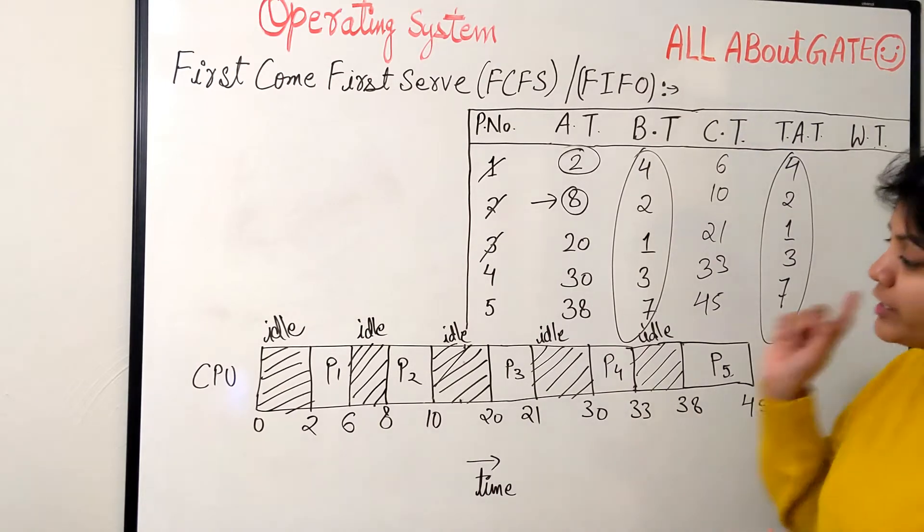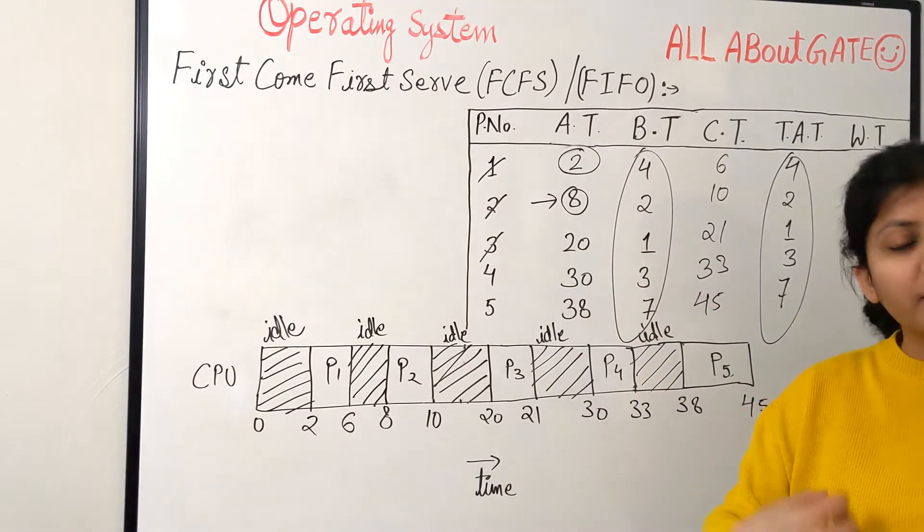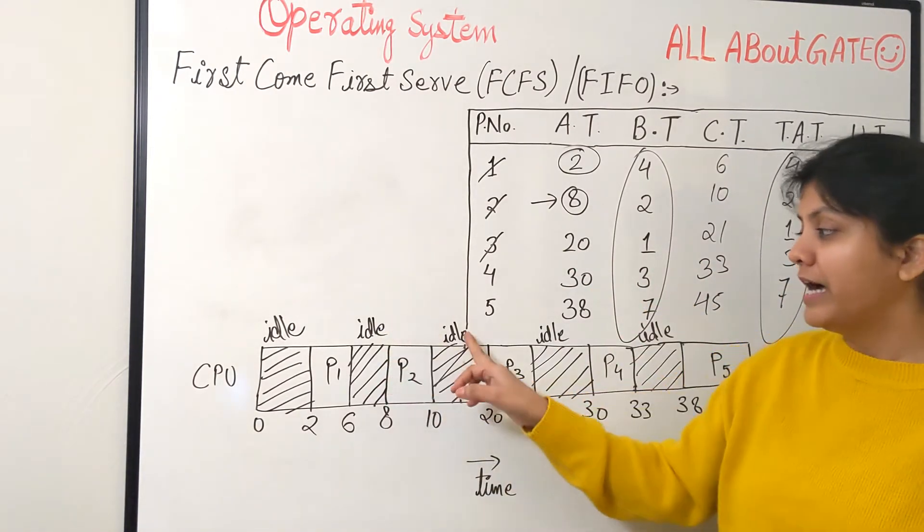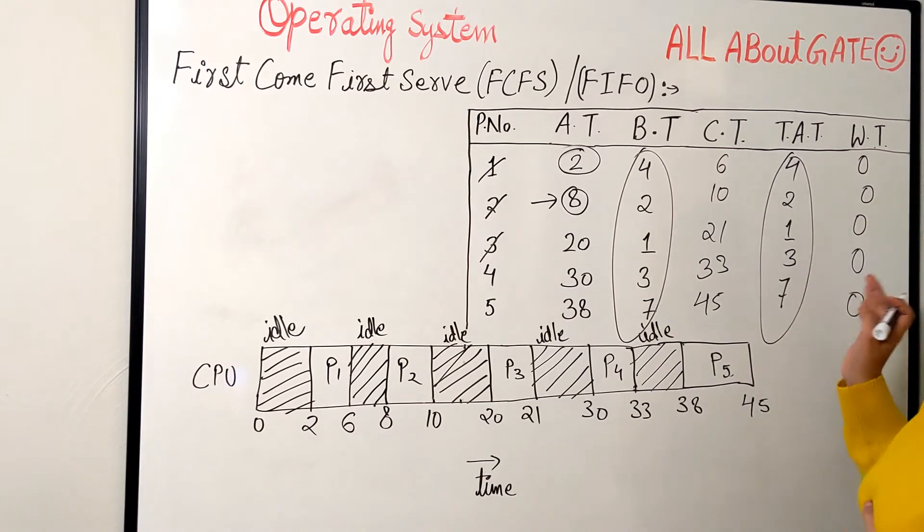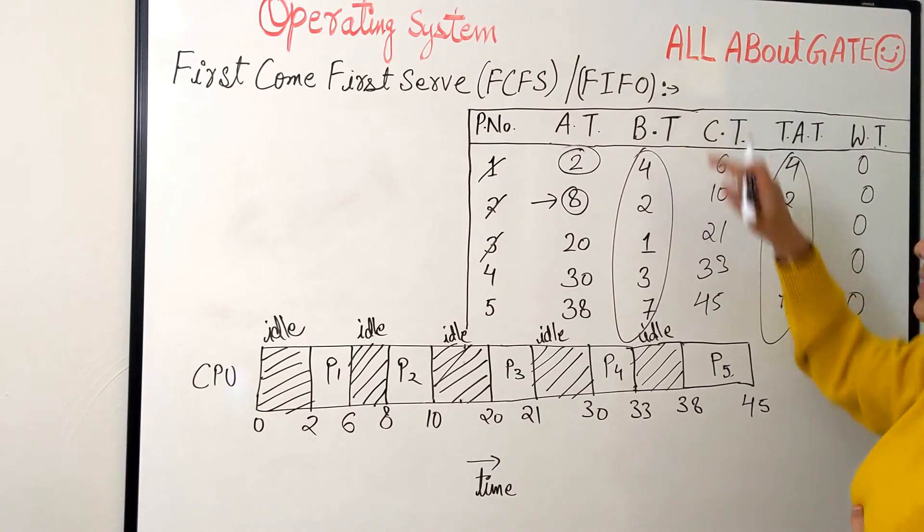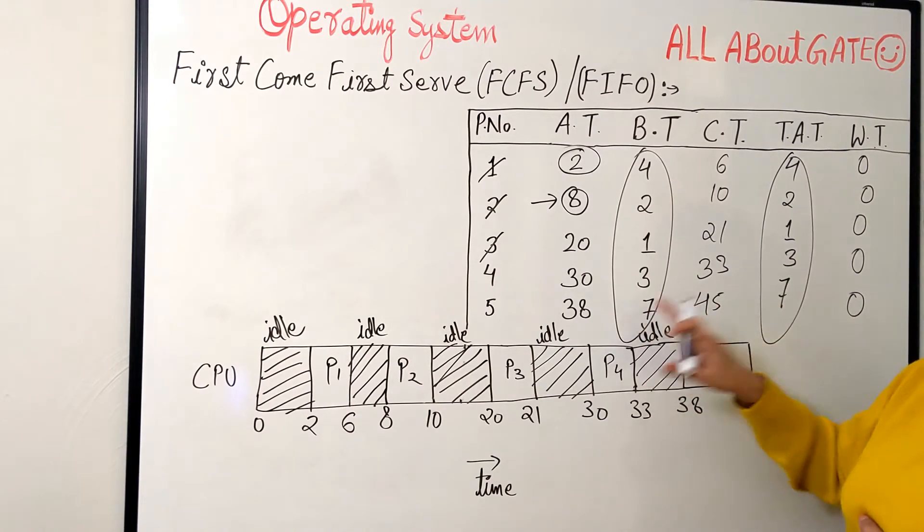Because none of the process has to wait. None of the process has to wait. In fact CPU was waiting for process to come and in that relation it was nothing but idle. So now comes the waiting time and because I said none of the process has to wait, if you just want to write you can simply write 0, 0, 0, 0, 0 because none of the process has to wait. Now if you want to make sure you can simply check from turnaround minus burst time. 4 minus 4: 0. 2 minus 2: 0. 1 minus 1: 0. 3 minus 3: 0. 7 minus 7: 0.